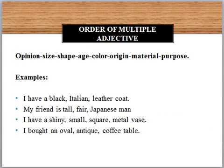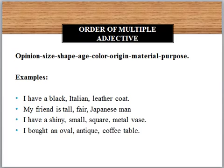When you want to use more than one adjective in a sentence, you have to follow a specific rule and sequence: opinion, size, shape, age, color, origin, material, purpose. This is the pattern you have to follow when you use more than one adjective.